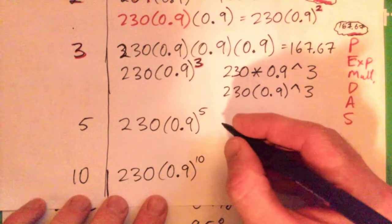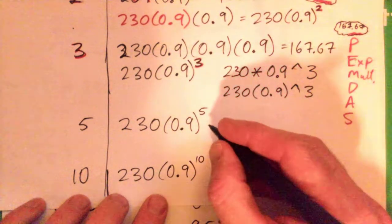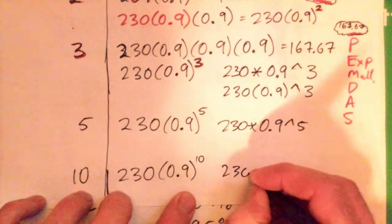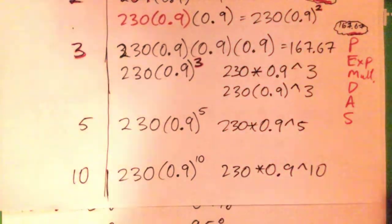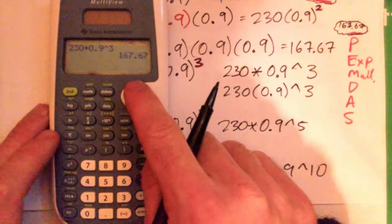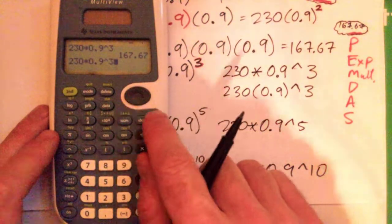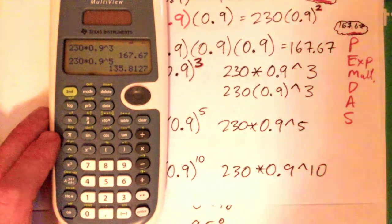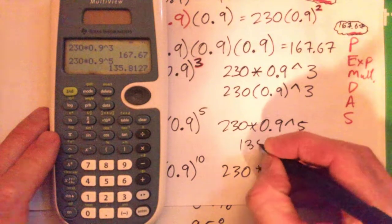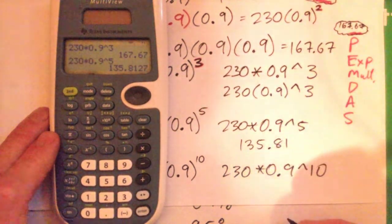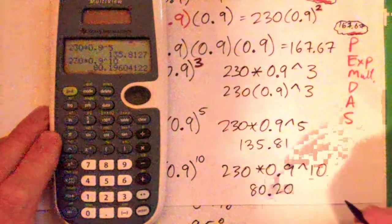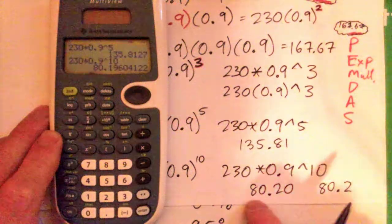So in the calculator, that's 230 star 0.9 to the power of five, and this is 230 star 0.9 to the power of 10. So rounding to the nearest two decimal places, this one is 135.81, and this one is 80.20 or 80.2 pounds.